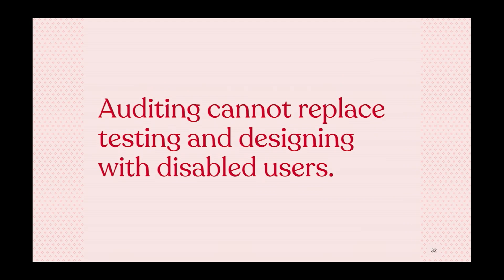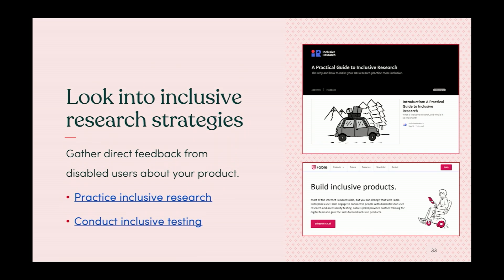Auditing is not the end of accessibility — it's often the start. It can't replace testing and designing with disabled users. It cannot replace the perspectives we need to be hearing from people who have disabilities. Look into inclusive research strategies, because an audit can find some things, but it's still usability. Look into a practical guide to inclusive research, companies like Fable, and make friends with folks who have disabilities.